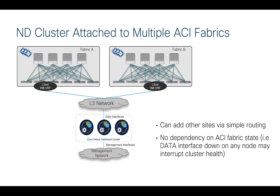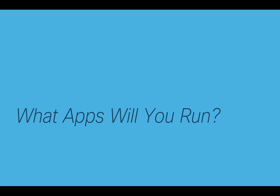The second benefit is there's no dependency on the ACI fabric state. With the direct-connect method, if you're upgrading the fabric and rebooting leaves, the data interface might go down as a consequence, and the cluster might think two nodes are unavailable. This adds complexity for the cluster. That's why I don't like the direct-connect model. Ultimately it's your choice — both are valid and fully supported — but I happen to prefer the Layer 3 approach, and that's what I'll show when setting up my cluster.